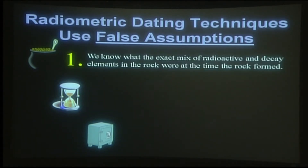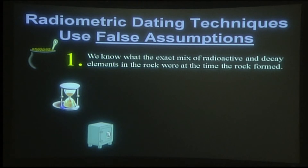Number one, they assume that we know the exact mix of radioactive material and the decay elements in the rock that were there at the time the rock formed. Of course this is a very false assumption because no scientist was there when the rock formed. No scientist can tell you that there was no daughter product in the rock to start with, or that there was only parent element in the rock to begin with.